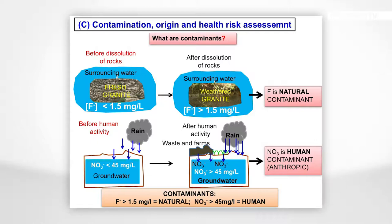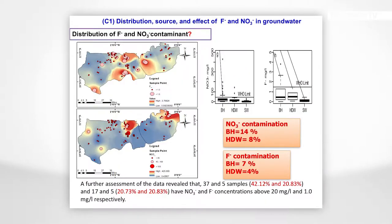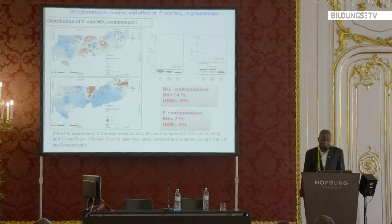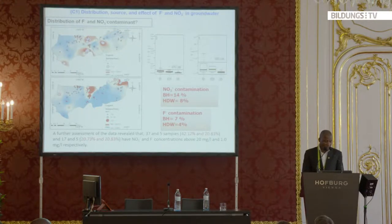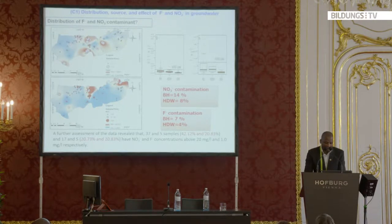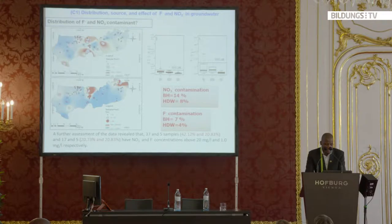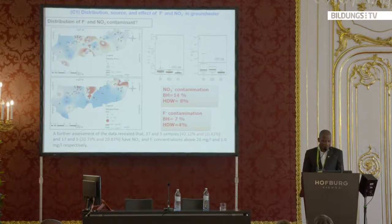This graph gives a spatial distribution of nitrate behavior in the study area. Places showing high red values indicate high levels of nitrates. About 14% of boreholes and 8% of hand-dug wells have nitrate values above the stipulated guidelines. For fluoride, almost 7% of boreholes and 4% of hand-dug wells are high. A further assessment revealed that 37 and 5 of the samples — about 42% and 17% — have nitrate and fluoride values above 20 and 1 milligram per liter respectively.